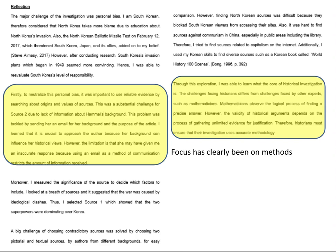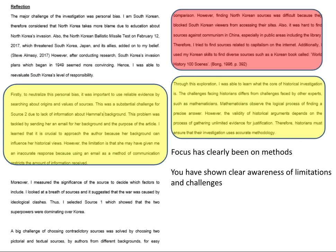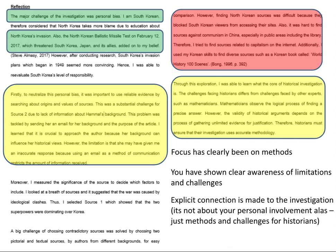Here's a real example of a reflection. You can see this student is clearly focused on methods: 'To neutralize this personal bias, it was important to use reliable evidence by searching about the origins and values of sources.' And: 'I was able to learn what the core of historical investigation is — the challenges facing historians differ from challenges faced by other experts.' They've shown clear awareness of limitations and challenges — for example, finding North Korean sources was difficult because they blocked South Korean viewers from access to their sites. There is also an explicit connection made to the investigation: 'The major challenge of the investigation was personal bias — I am South Korean, writing about North Korea.'